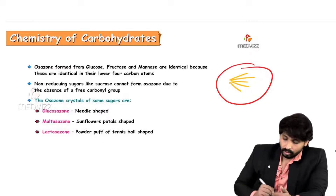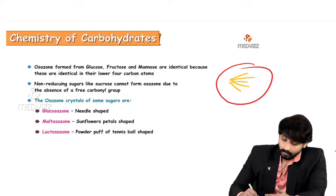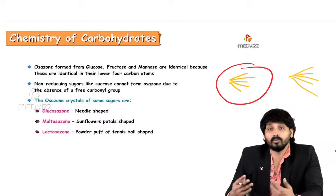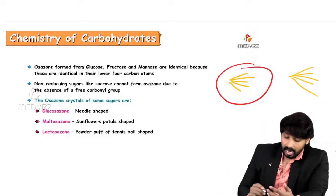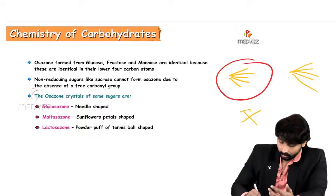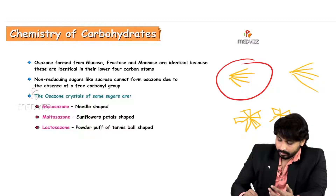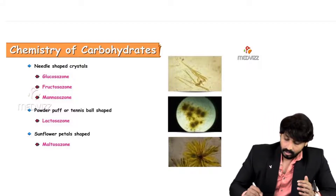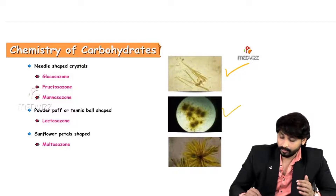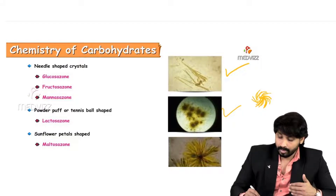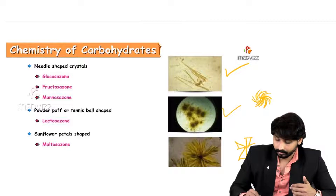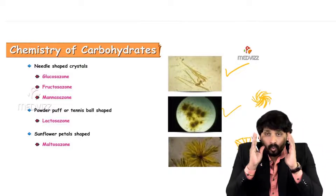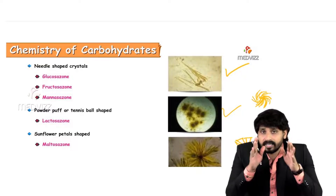The type of crystals formed identifies the sugar: glucosazone forms needle-shaped crystals; fructosazone also forms needle-shaped (broomstick-shaped) crystals; maltosazone forms sunflower petal-shaped crystals; and lactosazone forms powder puff or cotton ball-shaped crystals. Under the microscope, you can identify the crystal type and confirm which carbohydrate is present in the solution.